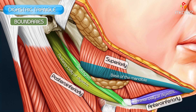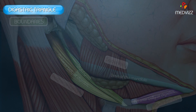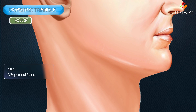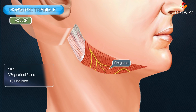Superiorly, which is also called the base, it is formed by the base of the mandible and the line joining the angle of the mandible to the mastoid process. The roof of the digastric triangle is formed by the skin and superficial fascia containing the platysma.